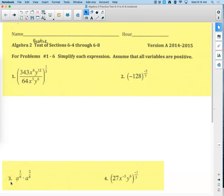All right, we've got the practice test for sections 6-4 through 6-8. And I was thinking last night when I looked this over, this is going to seem like a long time ago that we were doing this stuff. For problems 1 through 6, simplify each expression, assume that all variables are positive.